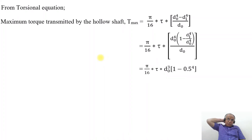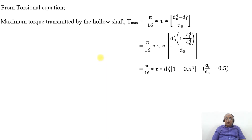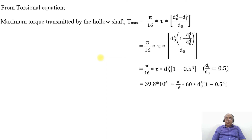This simplifies to (π/16) × τ × Do³ × (1 - 0.5⁴), since Di/Do = 0.5. Substituting T_max = 39.8 × 10⁶ Nmm and τ = 60 N/mm²: 39.8 × 10⁶ = (π/16) × 60 × Do³ × (1 - 0.5⁴).